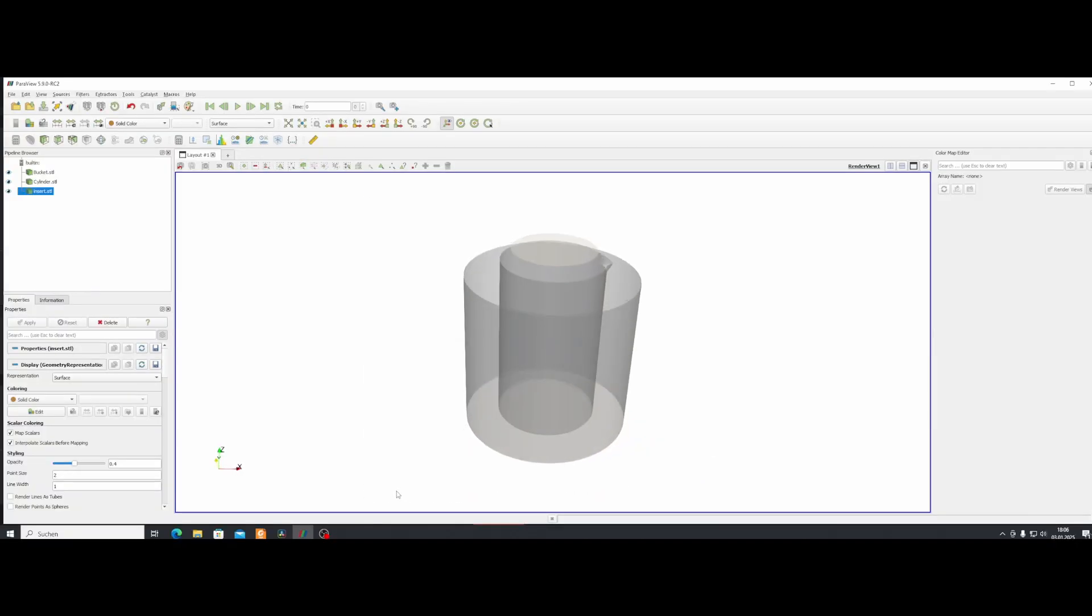With the experimental data in hand, the next step is to calibrate the DEM simulation in Lights. We begin by setting up a thermal model that mirrors the real-world experiment, including the geometry of the beaker, the properties of the sand and the initial and boundary conditions.